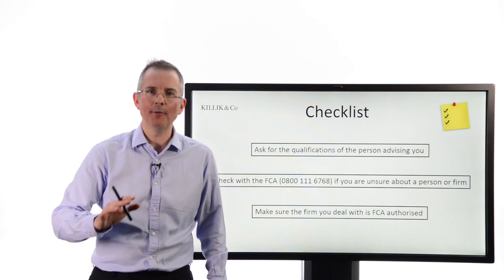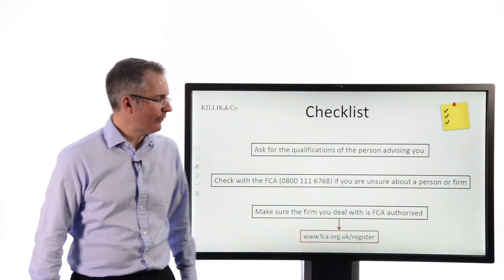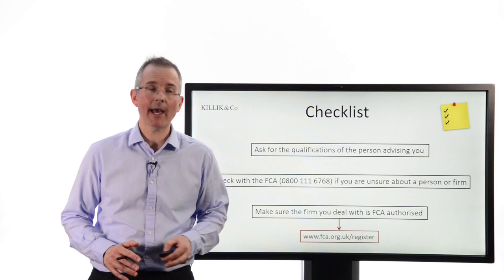Check with the FCA. That's the regulator. If you're unsure about a person, a firm or a scheme, you haven't heard of them and you're still carrying on the conversation, at least do some basic homework checks on who they are. Are they authorised? Does the FSA know about them? And make sure the firm you deal with is an authorised firm and you can check that relatively easily. There's a list of them.